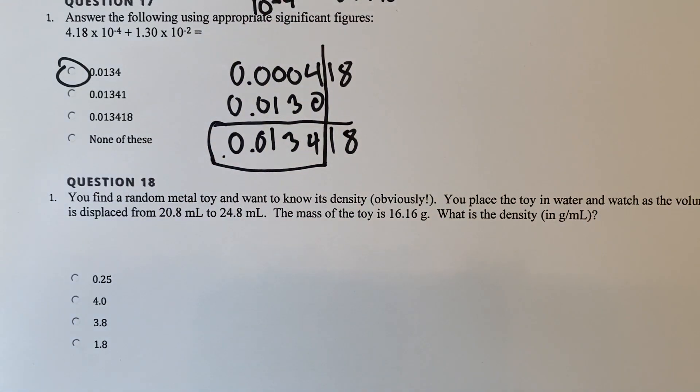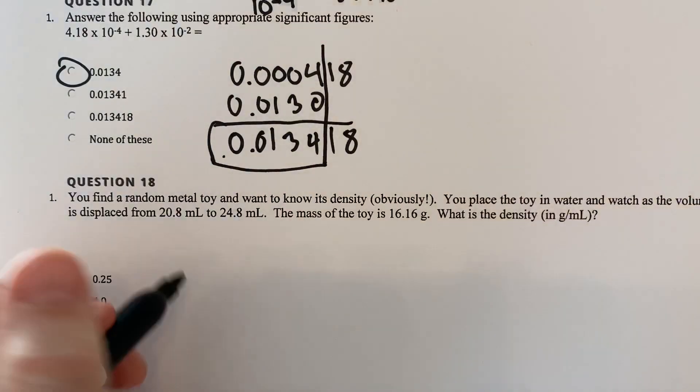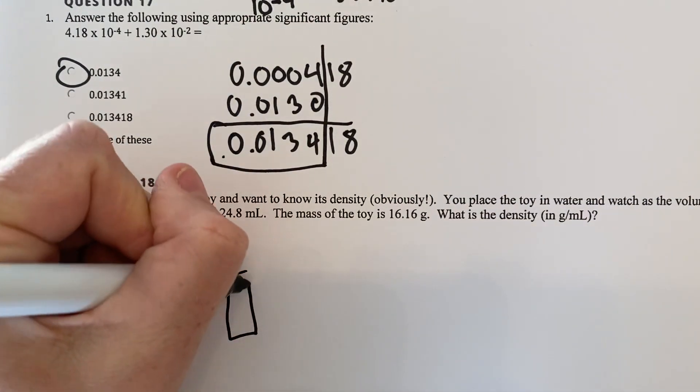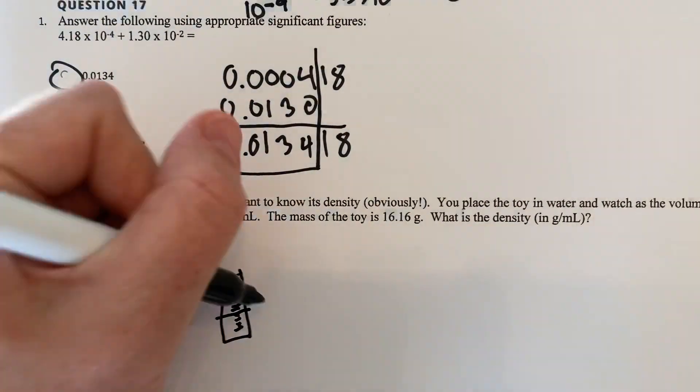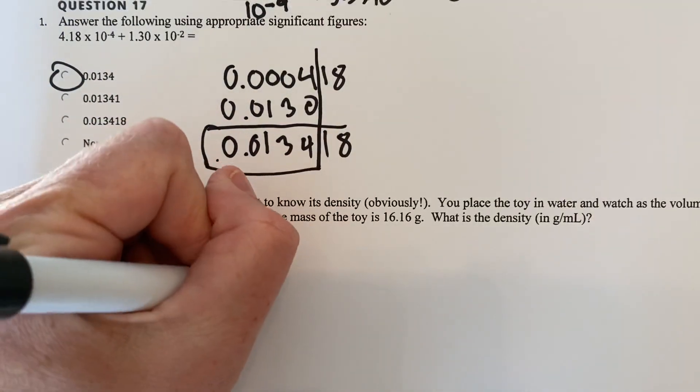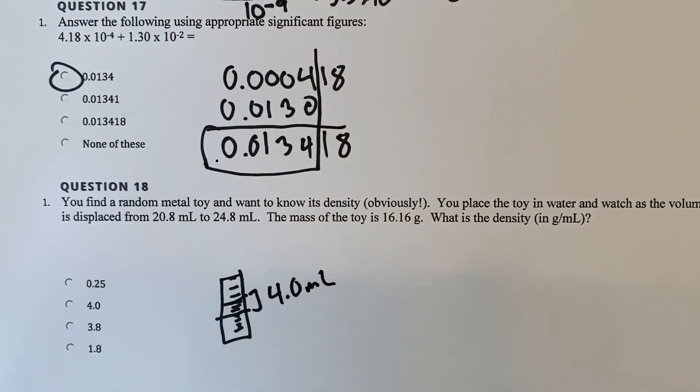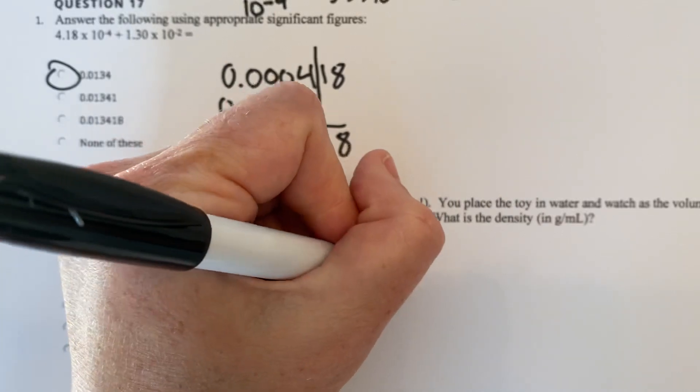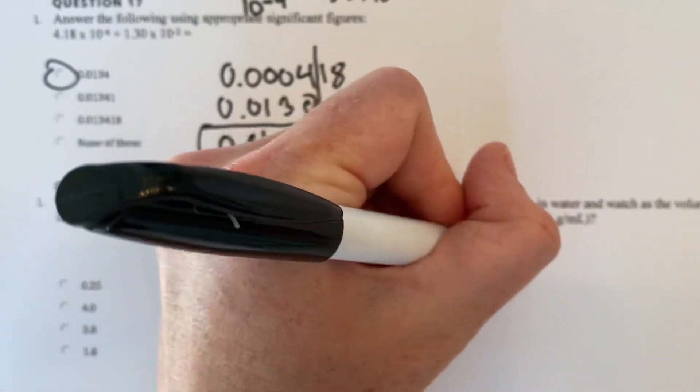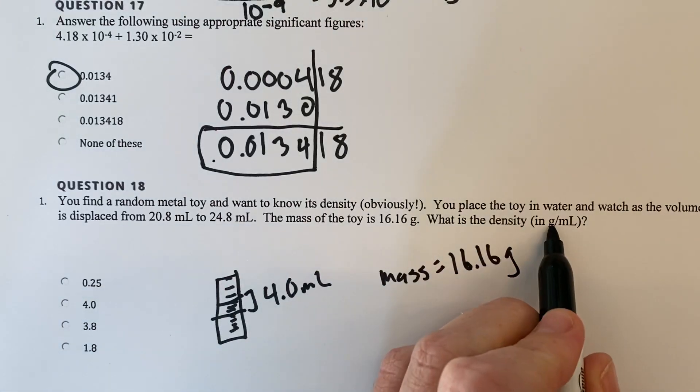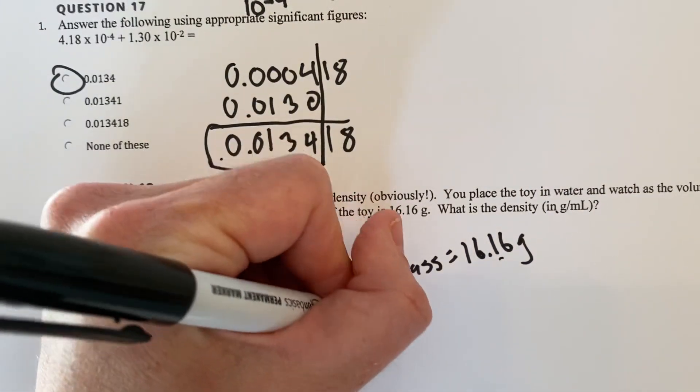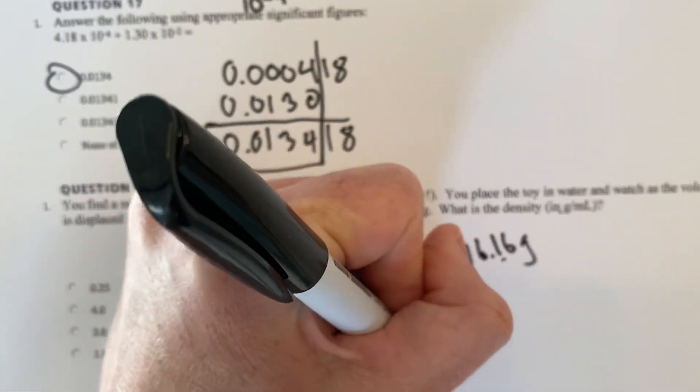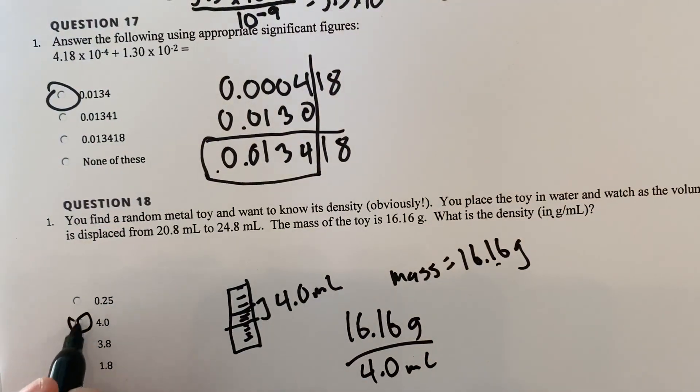Number 18. You find a random metal toy and you want to know its density. You place it in water and watch as the volume is displayed. So we kind of talked about this in lecture. You place a toy in some water. The volume goes up. In this case, it went up by a difference of 4.0 milliliters from 20.8 to 24.8. And we know that the mass is 16.16 grams. If we already know the equation because it says grams per milliliter, that means grams divided by milliliter. You take the grams, you divide it by the milliliter. Grams divided by milliliter will give you 4.0.